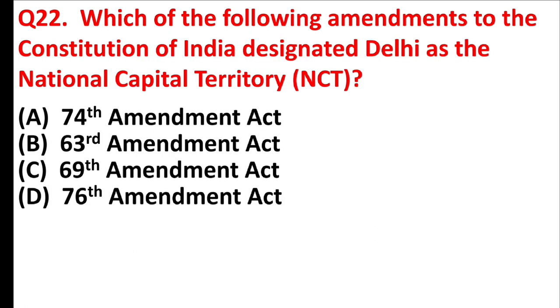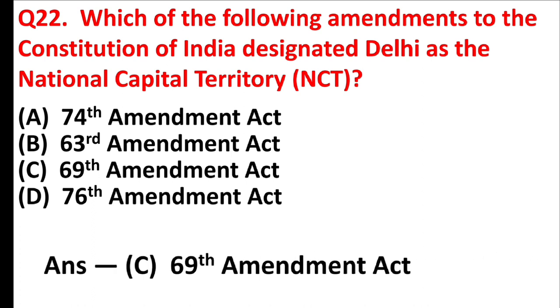Which of the following amendments to the Constitution of India designated Delhi as the National Capital Territory? Answer is Option C, 69th Amendment Act.